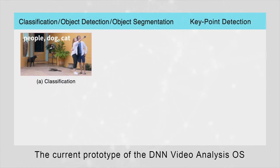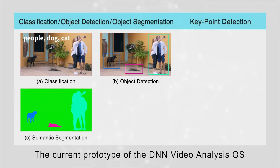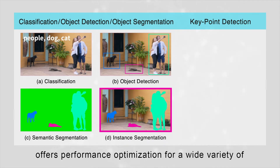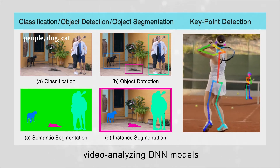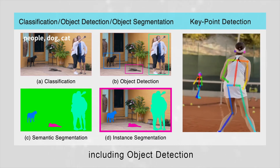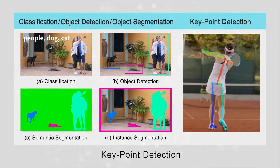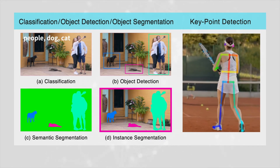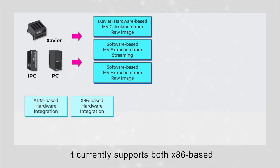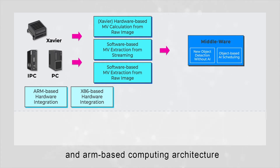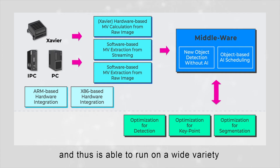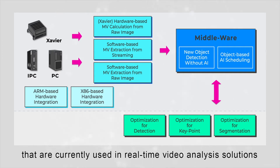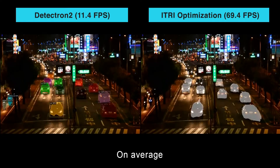The current prototype of the DNN Video Analysis OS offers performance optimization for a wide variety of video analyzing DNN models, including object detection, key point detection, and object segmentation. In addition, it currently supports both x86-based and ARM-based computing architecture and thus is able to run on a wide variety of hardware platforms currently used in real-time video analysis solutions.